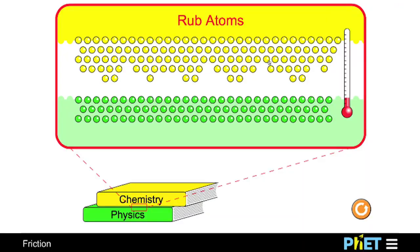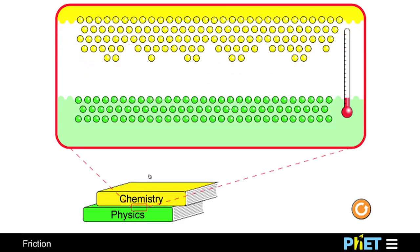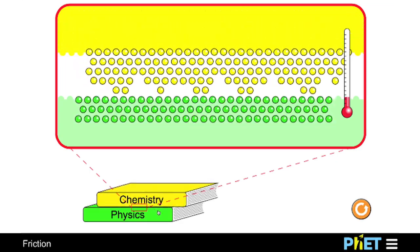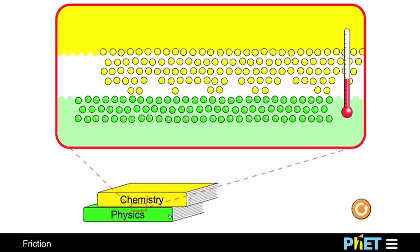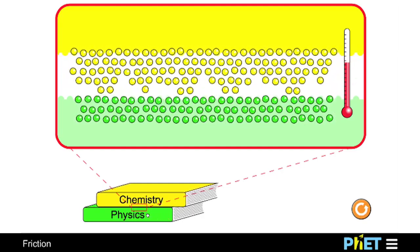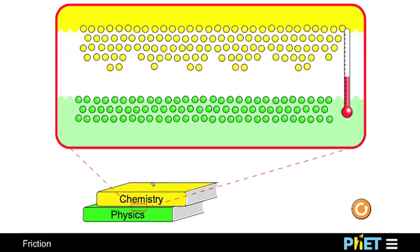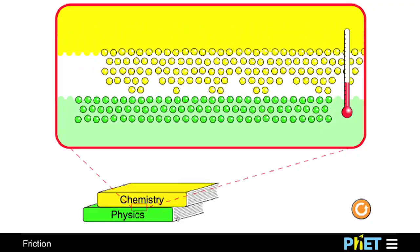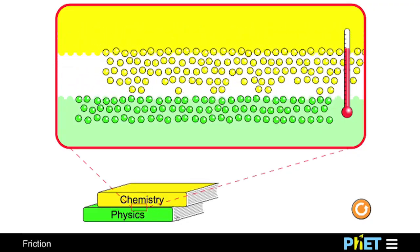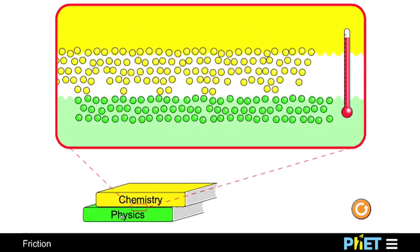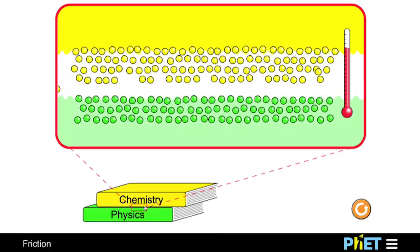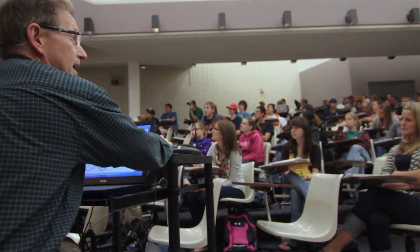Just the other day I was talking about friction, and one of the PhET sims shows a physics book underneath a chemistry book. You can see a zoom in on the interface where you can see the atoms, and you see the atoms jiggle more when you rub them together and they get hotter. That sim is very simple — it's just jiggling balls. But that's the message I want to get across: high temperature means more atomic jiggling.